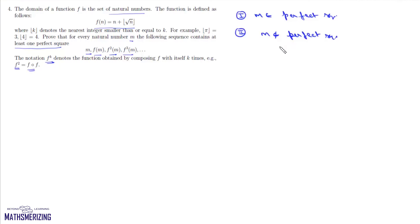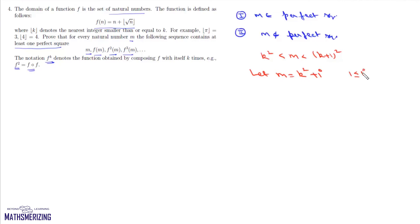If m is not a perfect square, then m lies strictly between two consecutive perfect squares. Say it lies between k² and (k+1)². We write m = k² + i, where i is an integer with 1 ≤ i ≤ 2k. Note that if i were 2k+1, m would equal (k+1)², so this range ensures m is between the two perfect squares.